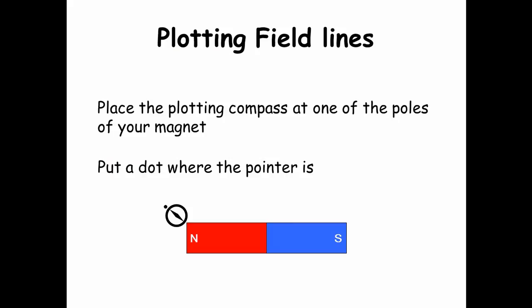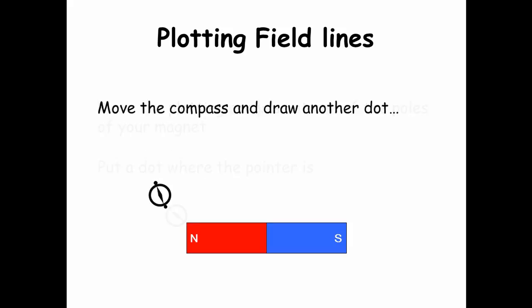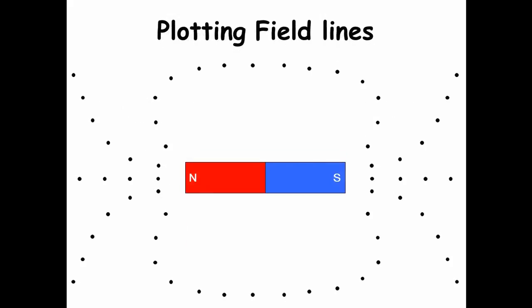Plotting field lines. Place a plotting compass at one of the poles of your magnet and draw dots where the pointer is. Move the compass and draw another dot. If you do this enough, eventually you're going to see the magnetic field lines around your magnet.